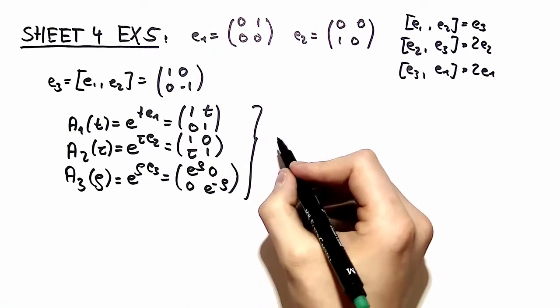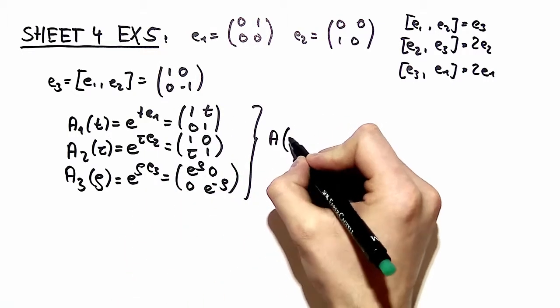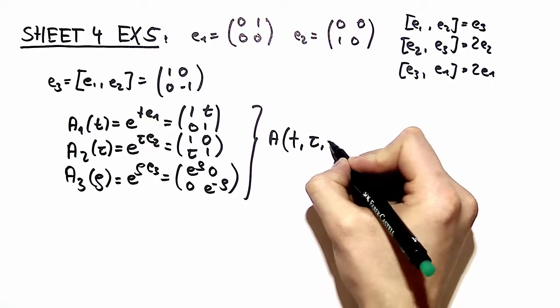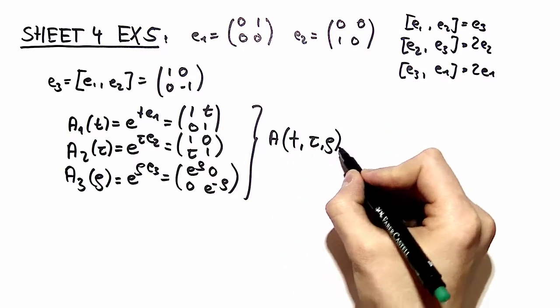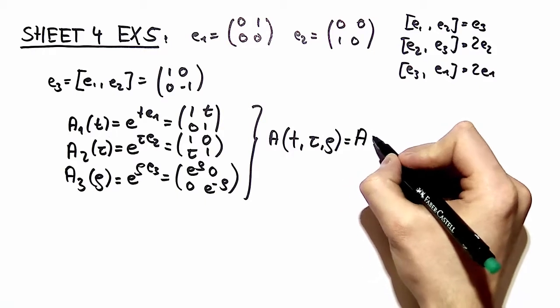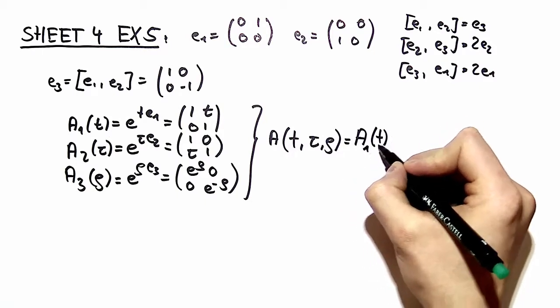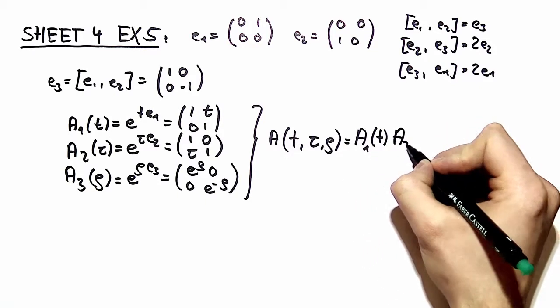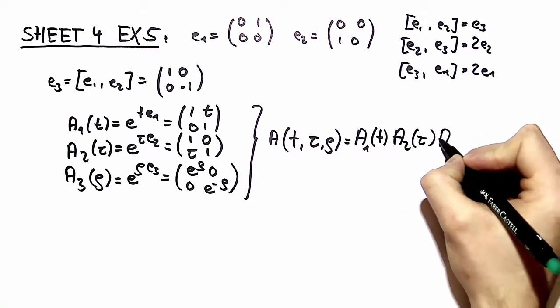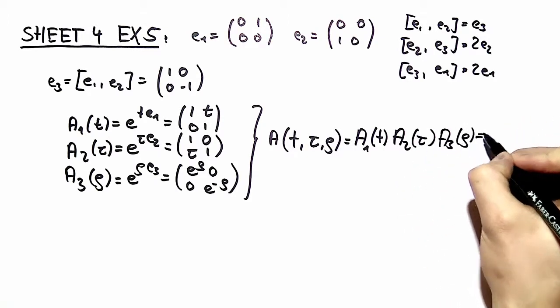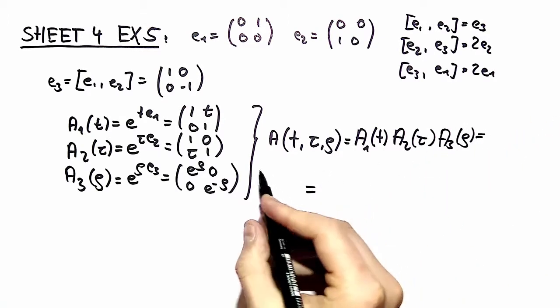These exponentials make it possible to construct the matrix representation with a three parameter group. This is by definition nothing else than a1 of t times a2 of tau times a3 of rho, and you just multiply